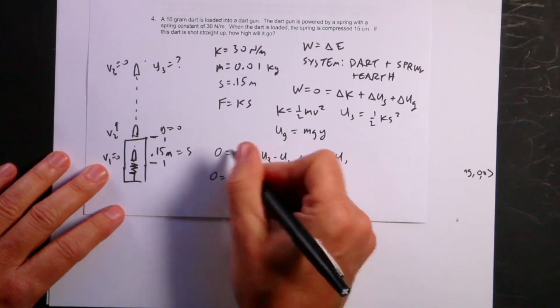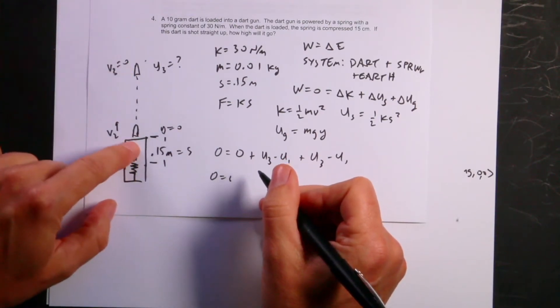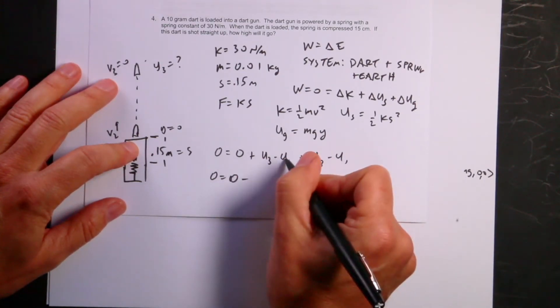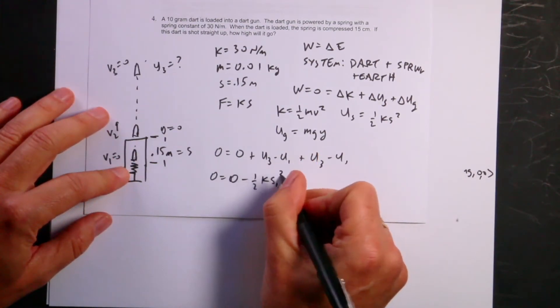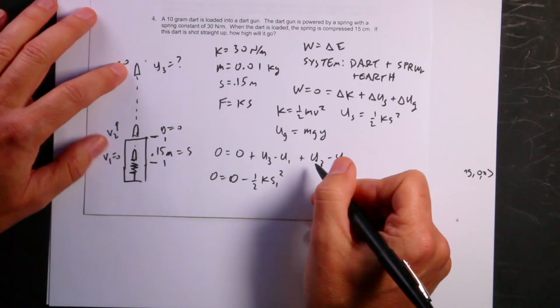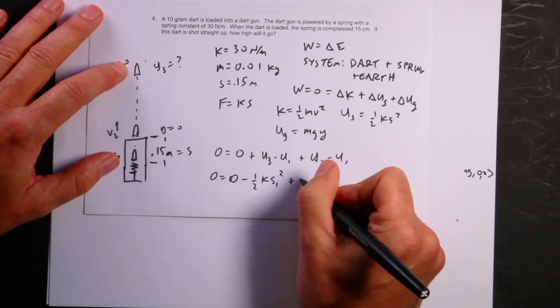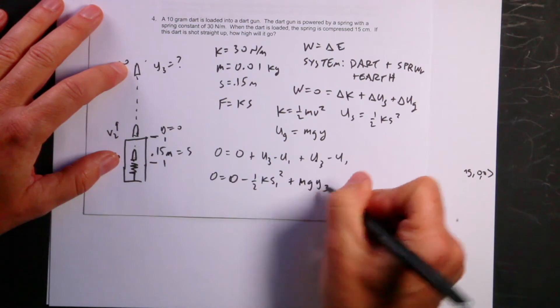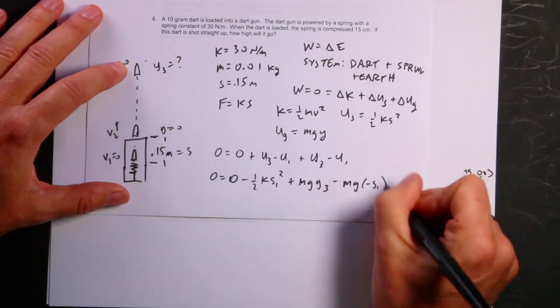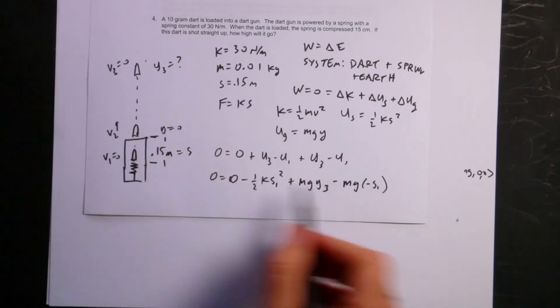So zero equals the change in kinetic. Well, it's at rest there, it's at rest there. So that's going to be zero. Plus the change in spring potential energy. So this is going to be plus u3 minus u1, plus u3 minus u1 for gravity. What's the potential energy in the spring up here? Zero, right? Because it's not connected to the spring anymore. So this is zero, minus the spring potential energy at the beginning, which is one half ks1 squared. What's u3 for gravity? Up here, it's going to be mg y3, which is what we're looking for, minus mg negative s1, because it starts 0.15 meters below my origin.